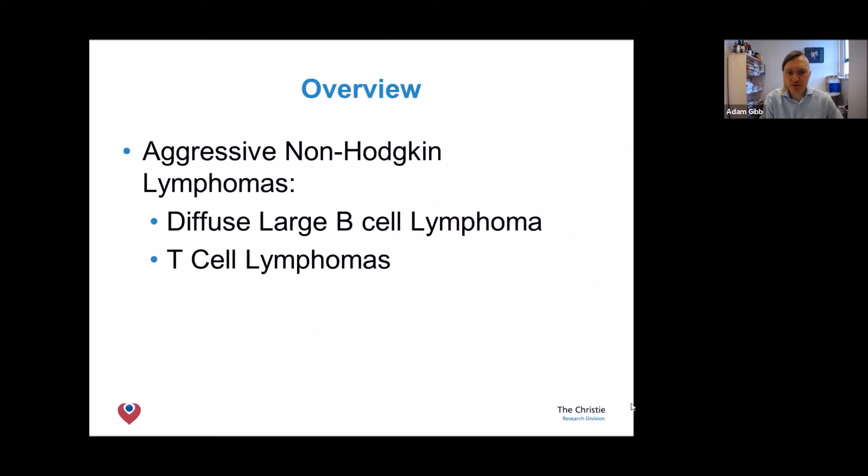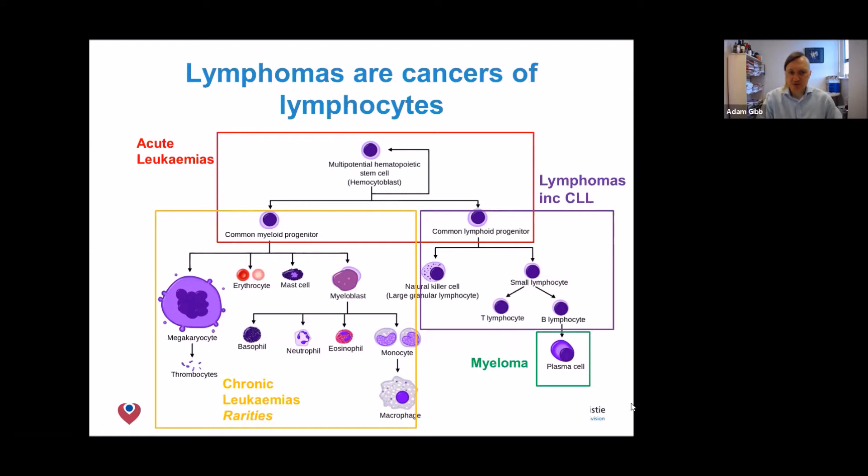A brief overview of the talk: we're going to speak about the two most common aggressive non-Hodgkin lymphomas — the diffuse large B-cell lymphoma and the various T-cell lymphomas. As a little bit of background, the chart you see on the screen is the family tree of normal blood cells.